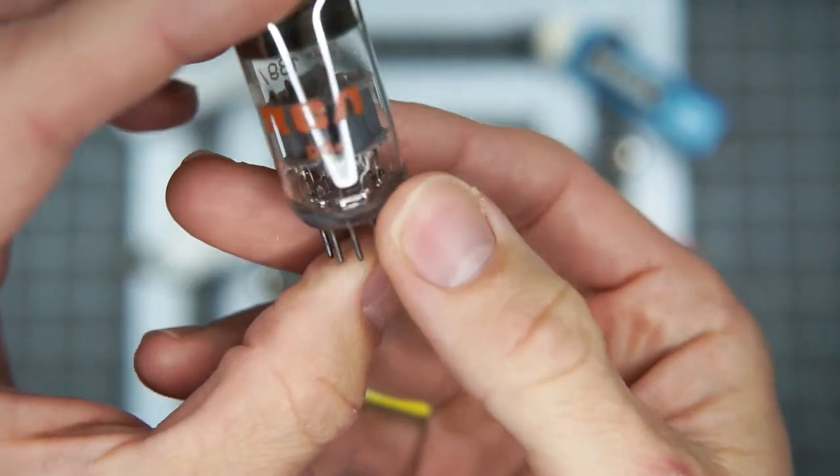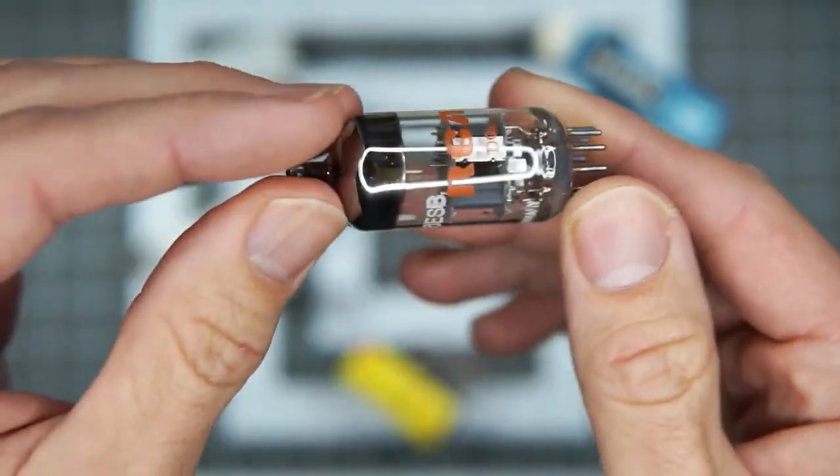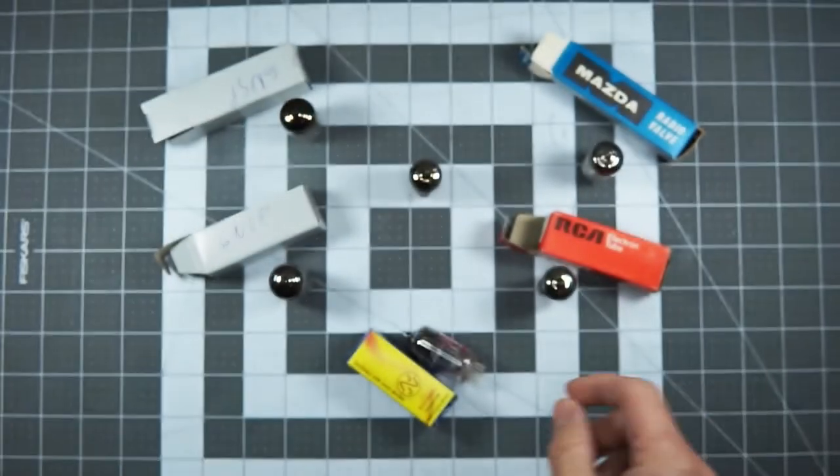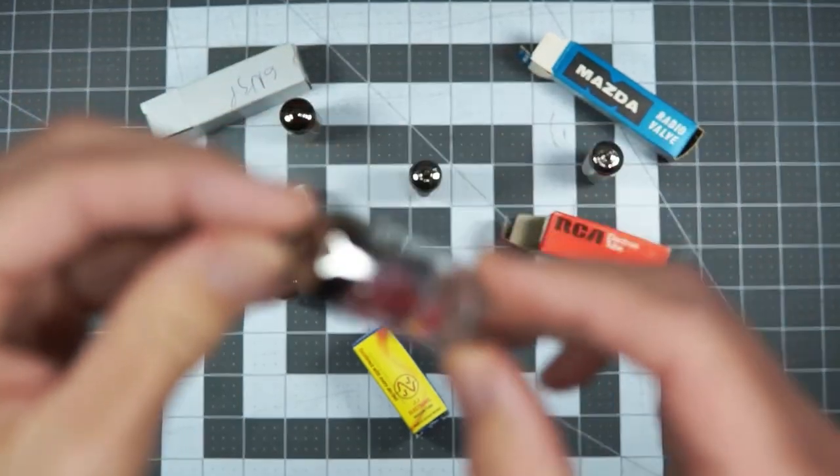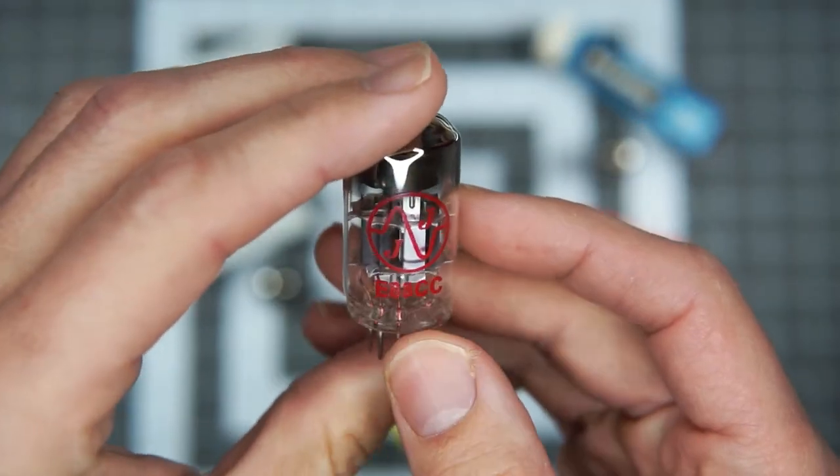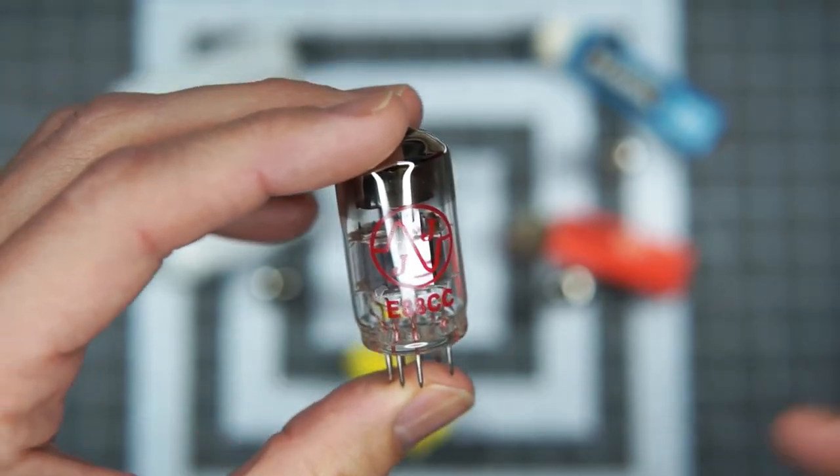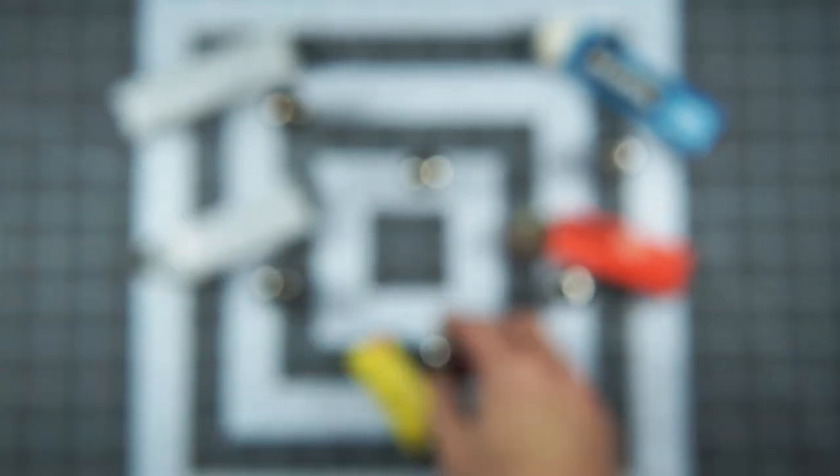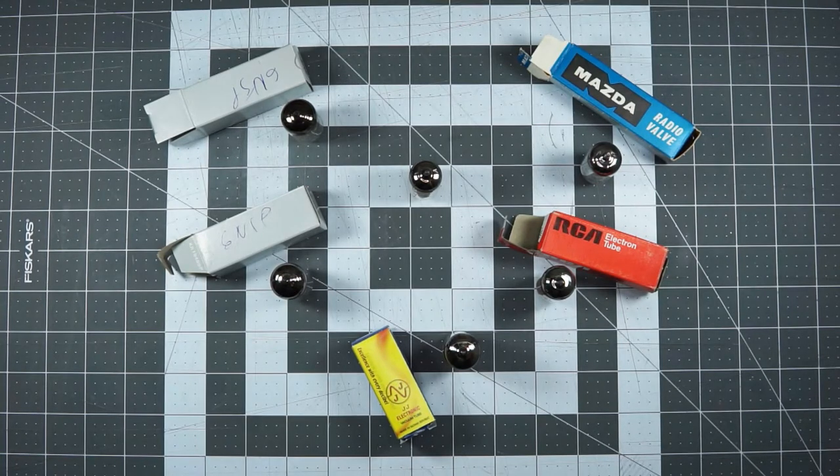RCA. And this is what's so interesting about tube rolling is you can't just pick a brand and be like, oh, all RCAs are great or all Telefunkens are great. It really comes down to each tube and each application of the tube. And that's what's so frustrating about it. This is an RCA, I think, made in Germany, probably by Siemens. Again, it's fine. Not that exciting. This is a new tube made by JJ Electronics, which I have some power tubes by them that I love. But this is just very okay.